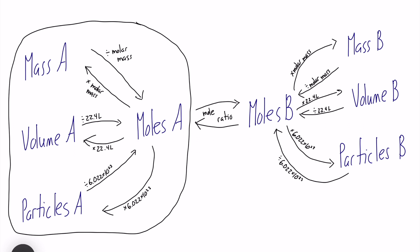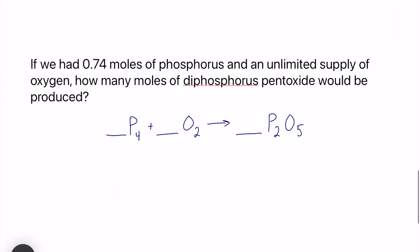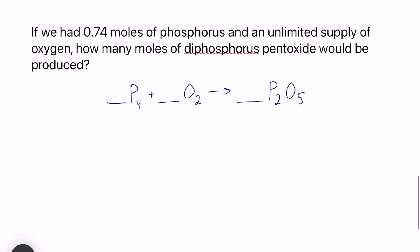We will be using this flowchart in one example in this video, and I'll be posting more videos within stoichiometry here in the next week or two. Let's take a look at our one example for this video, just a quick intro to questions related to stoichiometry. It says, if we have 0.74 moles of phosphorus and an unlimited supply of oxygen, how many moles of diphosphorus pentoxide would be produced?